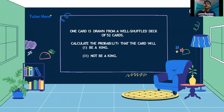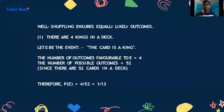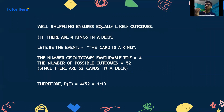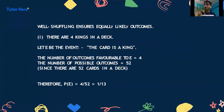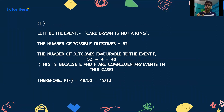Let's solve a few questions. One card is drawn from a well-shuffled deck of 52 cards. Calculate the probability that the card will be a king, or will not be a king. Well-shuffling ensures equally likely outcomes. There are 4 kings in a deck. Let E be the event the card is a king. The number of outcomes favourable to E is 4, and the total possible outcomes are 52. Therefore P(E) equals 4/52, which is 1/13. Now let F be the event the card drawn is not a king. The number of favourable outcomes for F is 52 minus 4, which equals 48. Therefore P(F) equals 48/52, which is 12/13.